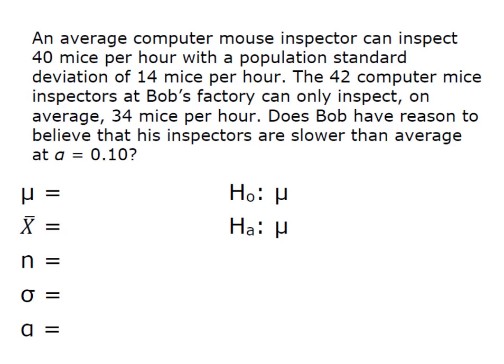I'm going to go through the problem and pick out the information that I have. So the average in the population is 40 but on average his guys can only inspect 34 so that becomes x̄. We had a sample of 42 inspectors and we were given a population standard deviation of 14 per hour and we're going to test at alpha of 0.10.